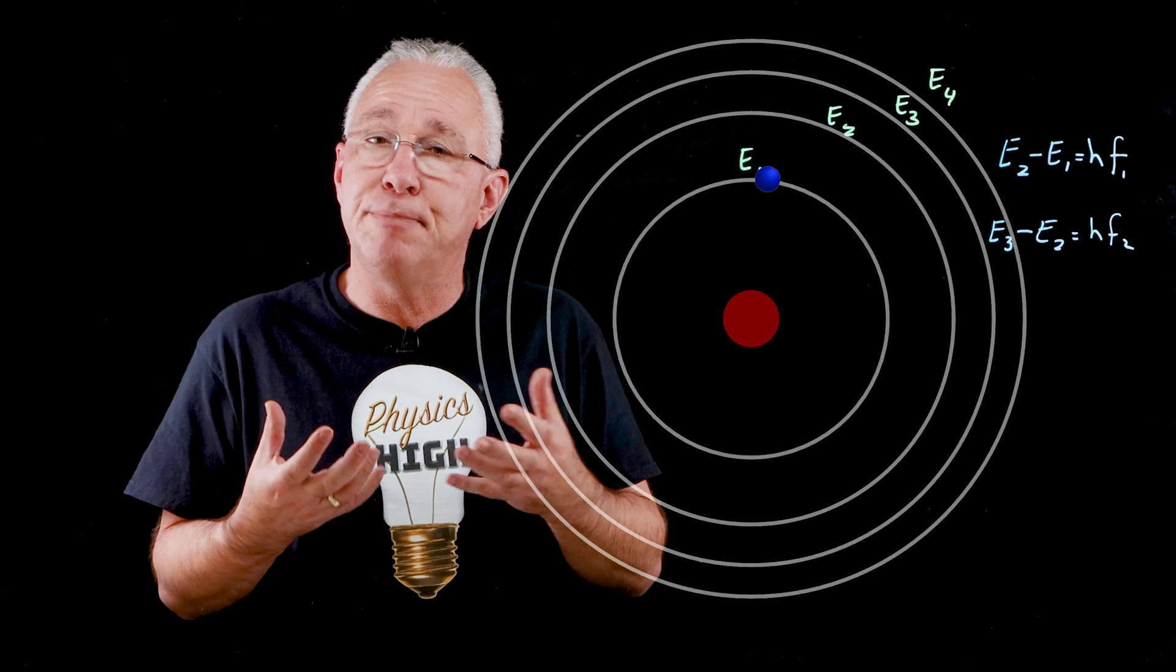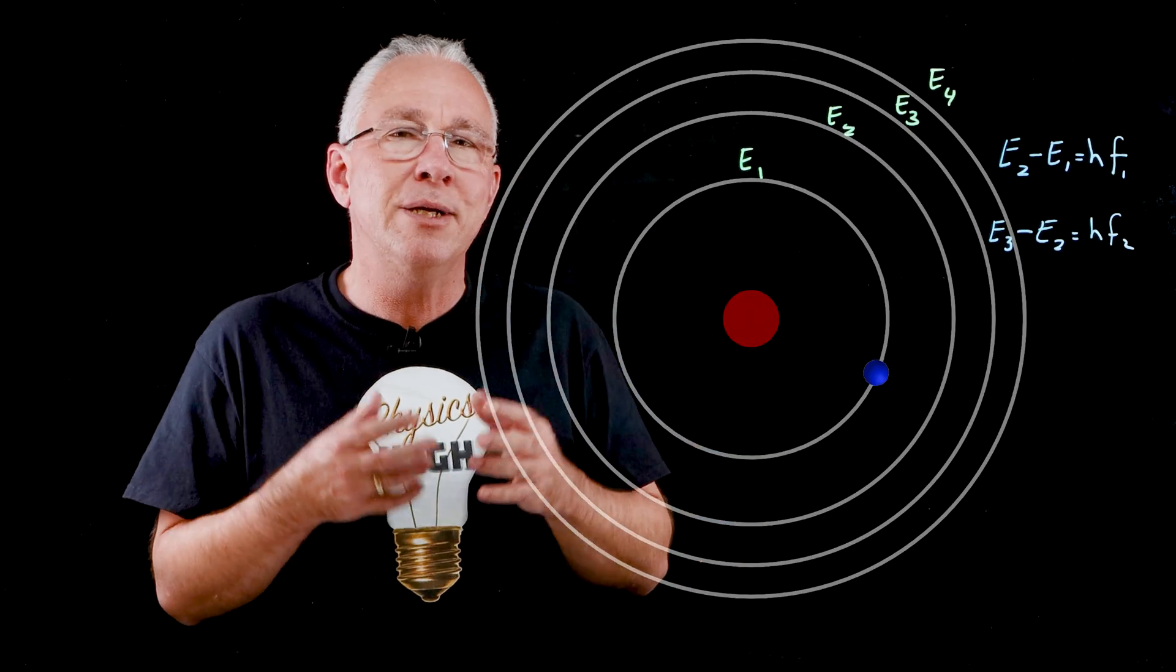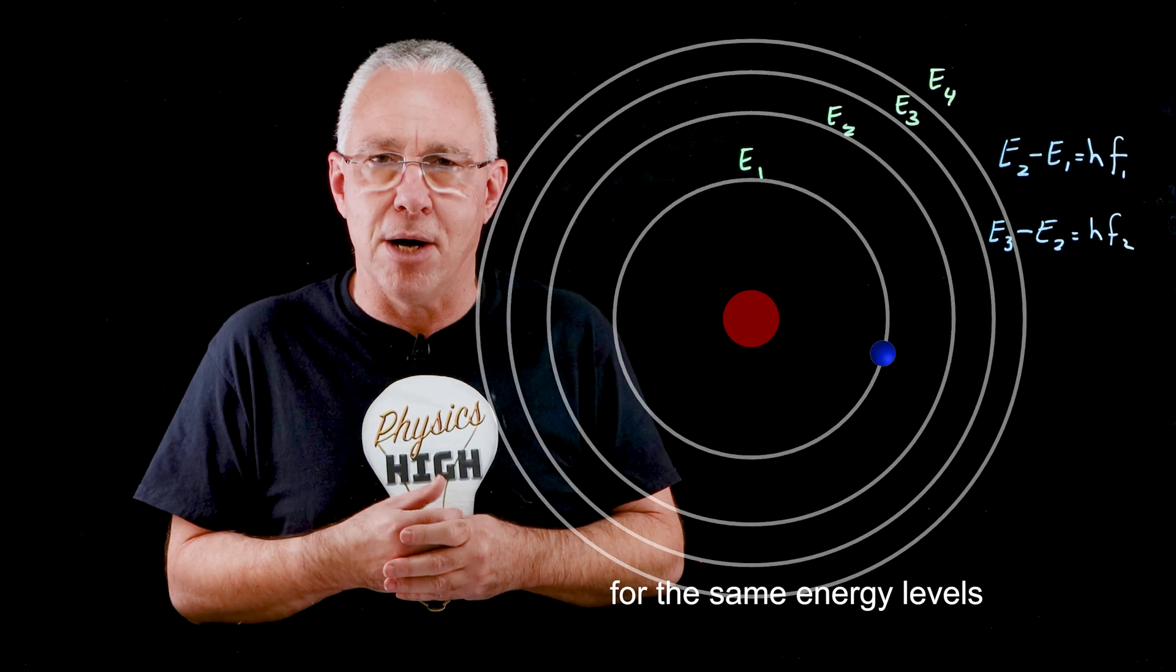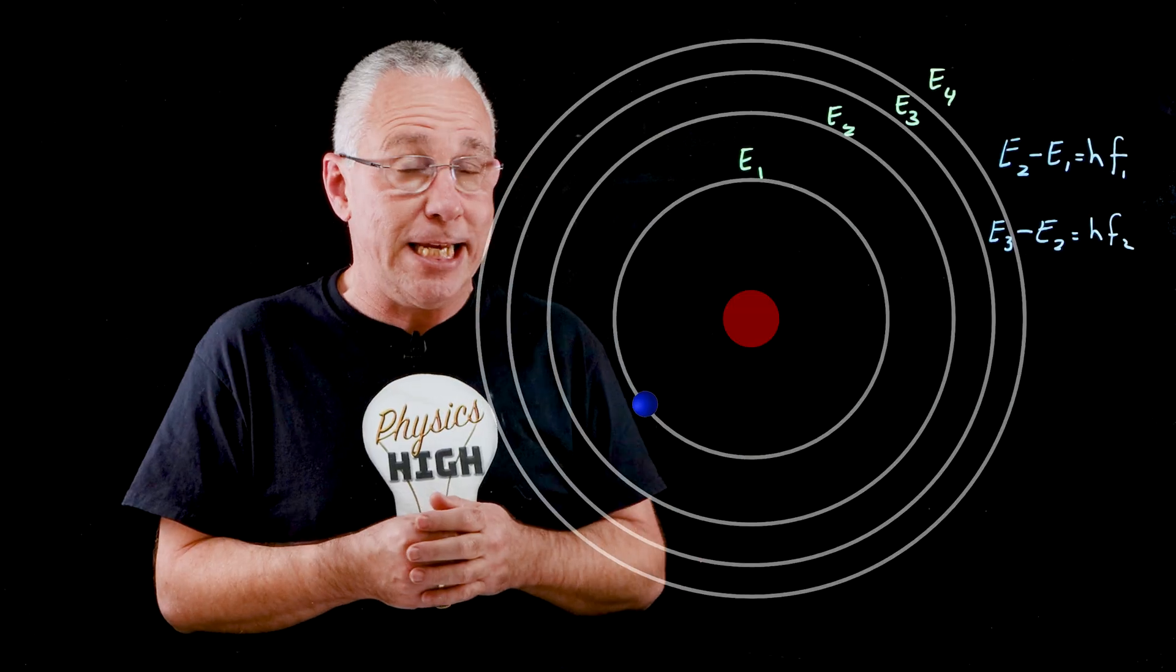In other words, the photon that is being absorbed by a particular electron to go to a new energy level will be the same type of photon emitted by that electron. Now this fits perfectly with the conservation of energy.